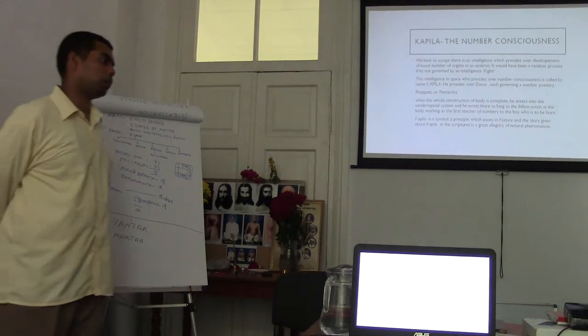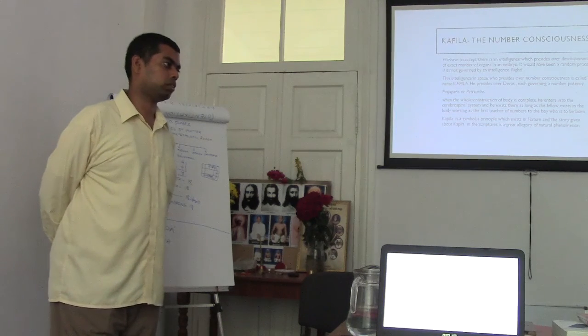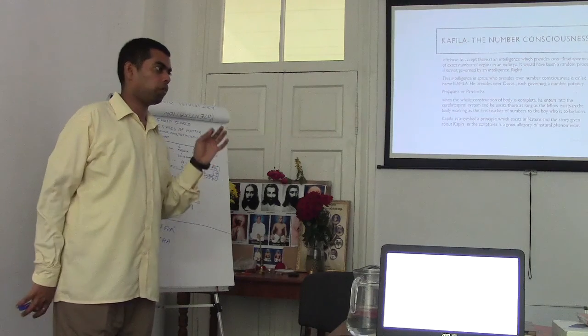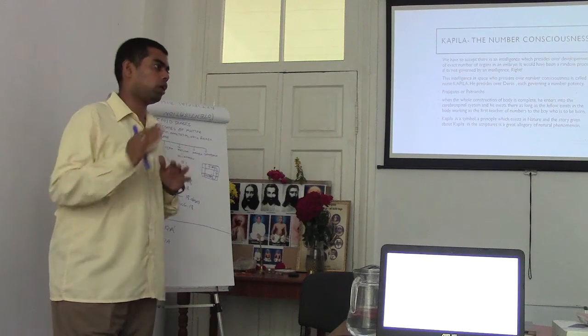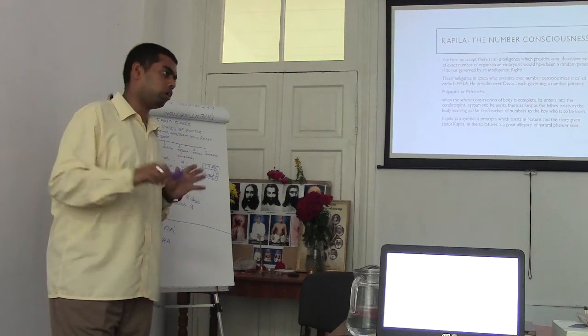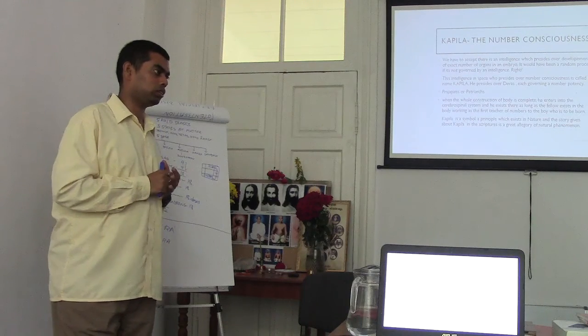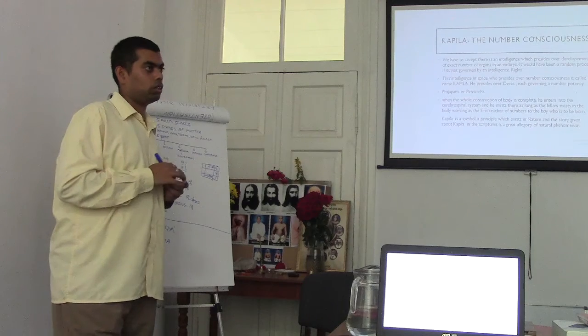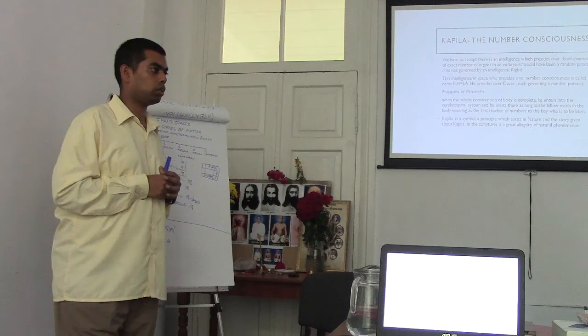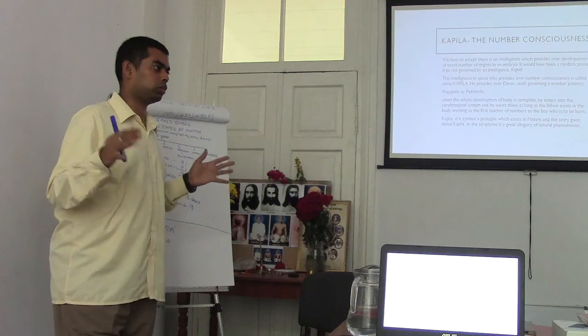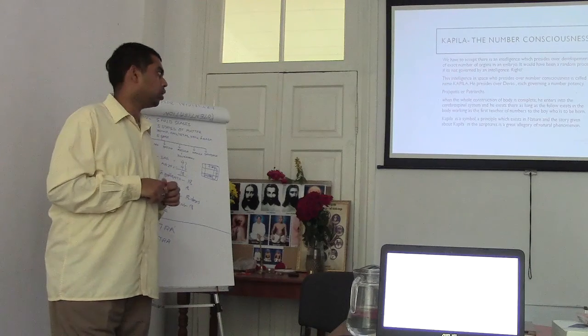So there is a story about Kapila in scriptures. You see, like morning I have explained about Mahabharata, the number of cantos, I mean the number of books in scripture, the number of shlokas in scripture are all symbolic. For example, in Ramayana there are 24,000 shlokas. It gives the message of Gayatri, 24,000. And this Bhagavata Purana, it is written as 12 cantos.